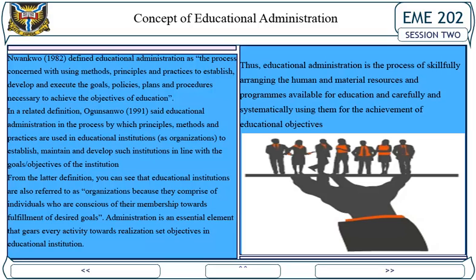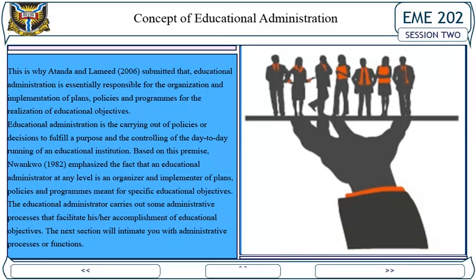In a related definition, Augusta Soya (1921) said educational administration is the process by which principles, methods and practices are used in educational institutions and systems as organizations to establish, maintain and develop such institutions in line with the goals and objectives of the institution. Educational institutions are referred to as organized organizations because they comprise individuals who are conscious of the idea and work towards fulfillment of desired goals. Educational administration is therefore a process of skillfully arranging the human and material resources and programs available for education.